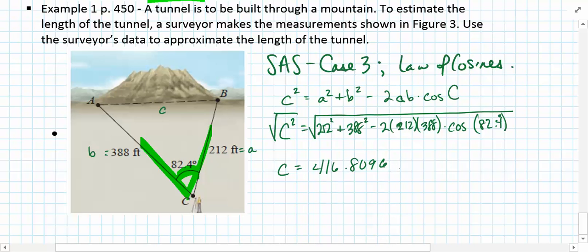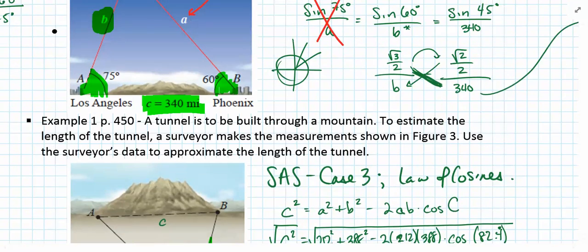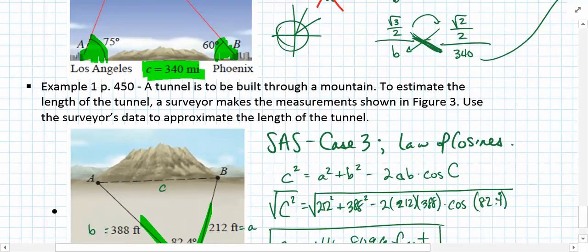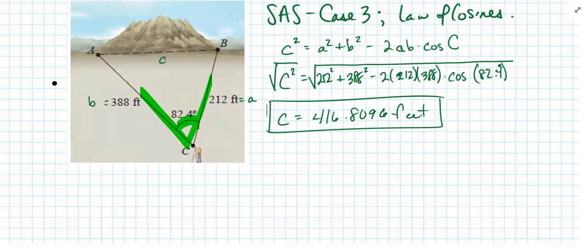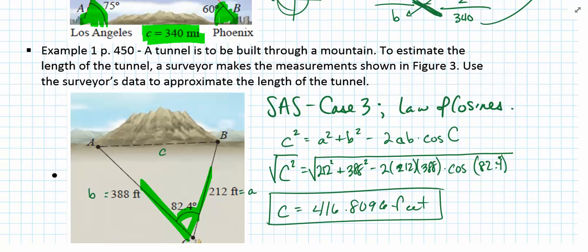416.8096, and the measurement is in feet. That tunnel is approximately 417 feet long. When using law of sines or law of cosines, it's really that simple: set up each equation carefully, indicate our known values, and use that to solve an unknown value or to solve the entire triangle. Please let me know if you have any questions. We'll be able to discuss these tomorrow in class.